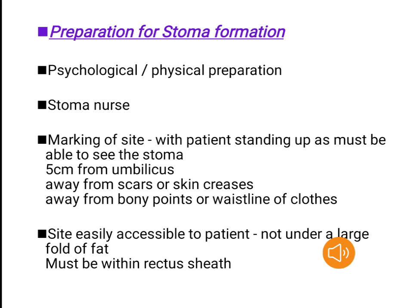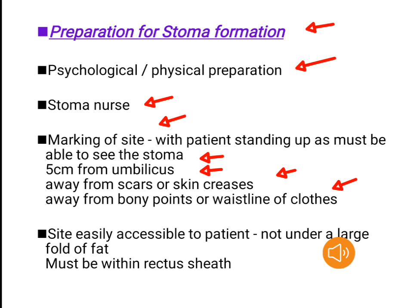Preparation for stoma formation. Psychological and physical preparation involving the stoma nurse. Marking of the site with the patient standing up, as they must be able to see the stoma. The site should be 5 cm from the umbilicus, away from scars or skin creases, away from bony points or the waistline of clothes, easily accessible to the patient and not under a large fold of fat, and must be within the rectus sheath.